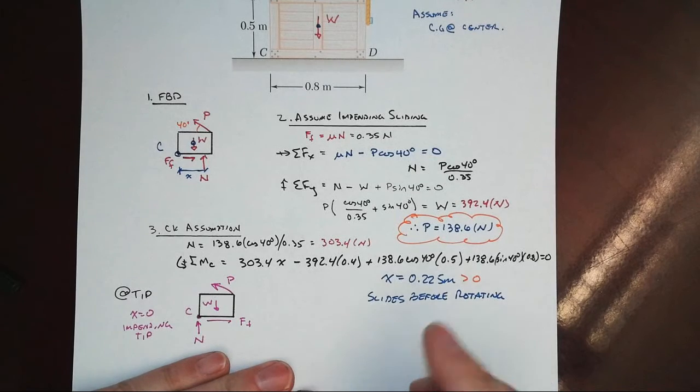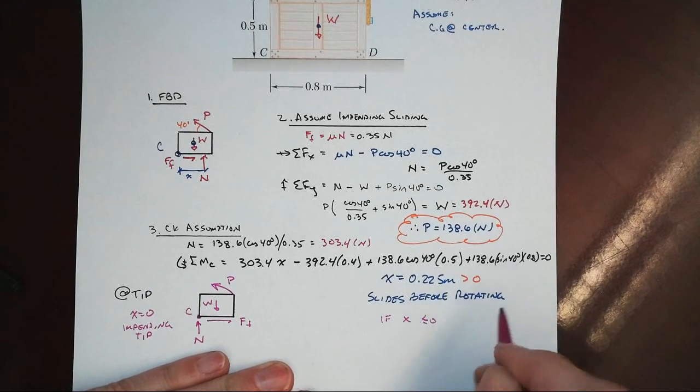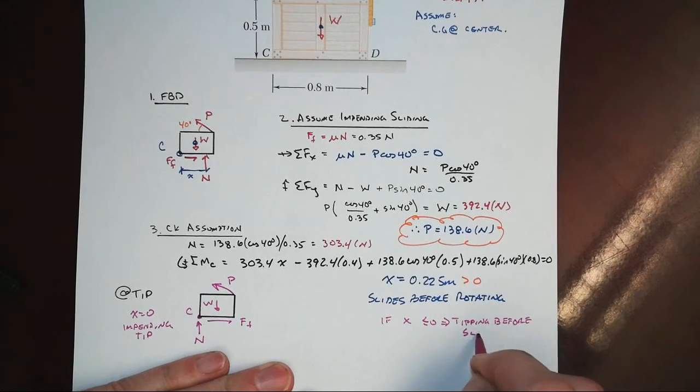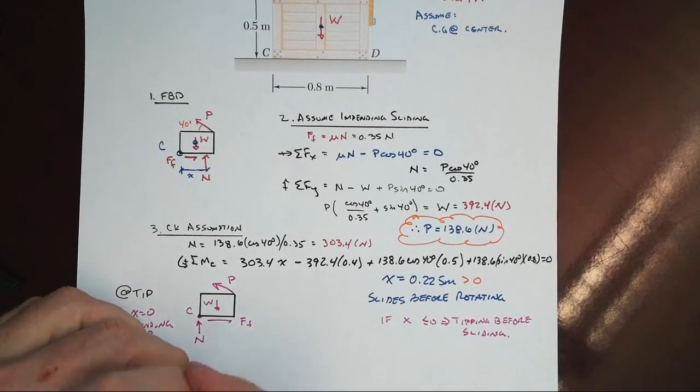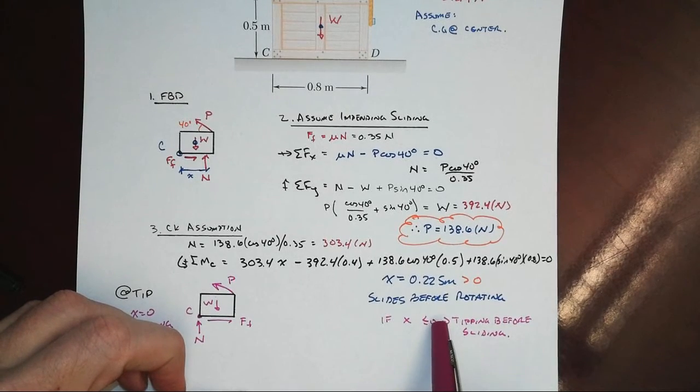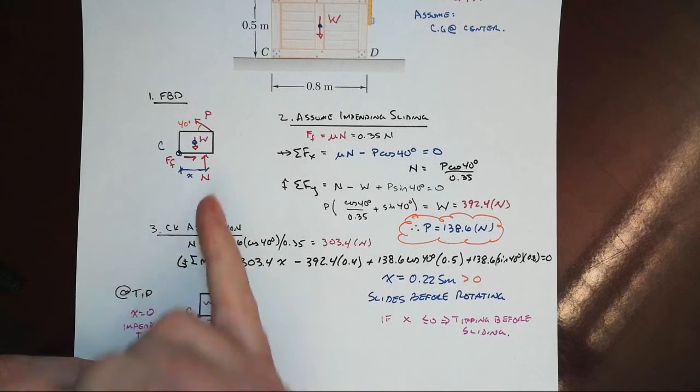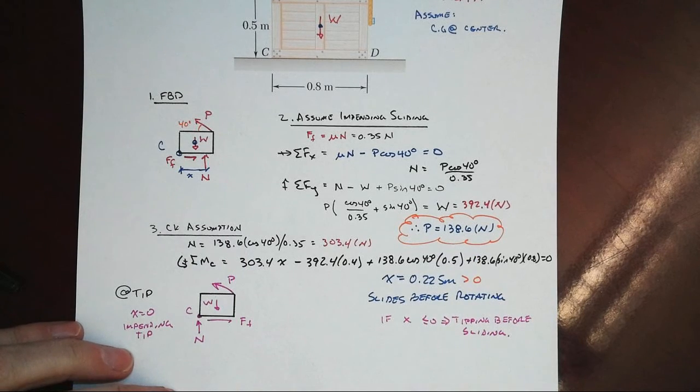And if x had been less than or equal to zero, that means we have tipping before sliding. That's why I concluded with the x being a positive number here that the normal resultant was acting out to the right. And so we have stable equilibrium just with a P value just below this one. And then when it reaches that value, we begin to slide.